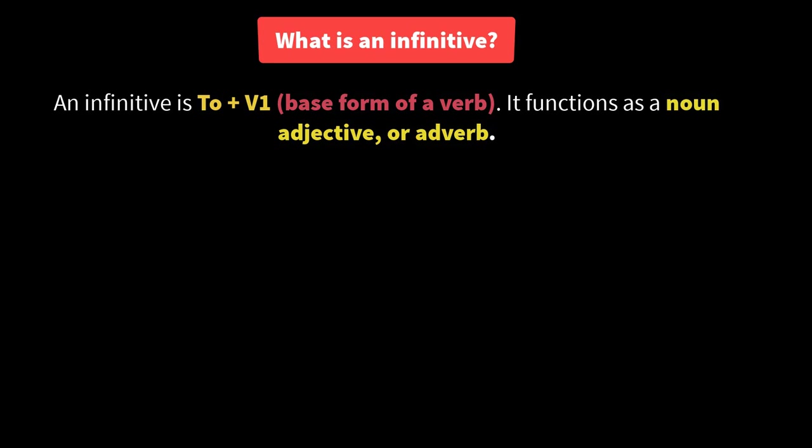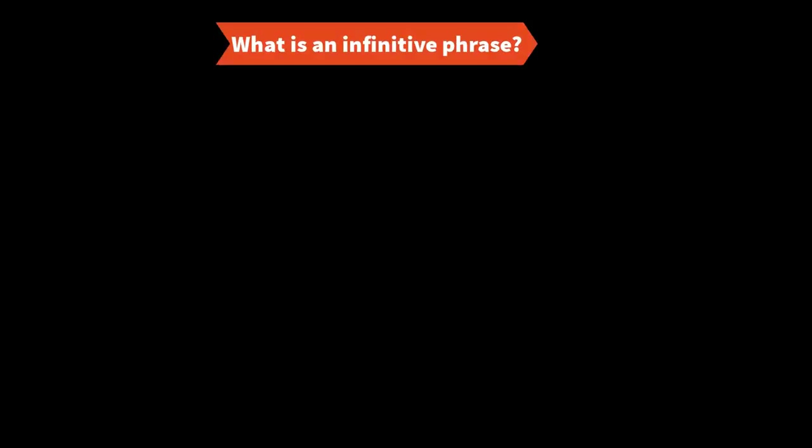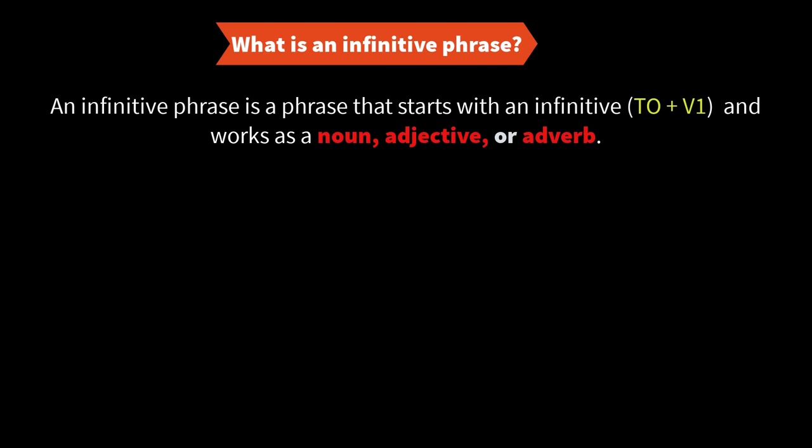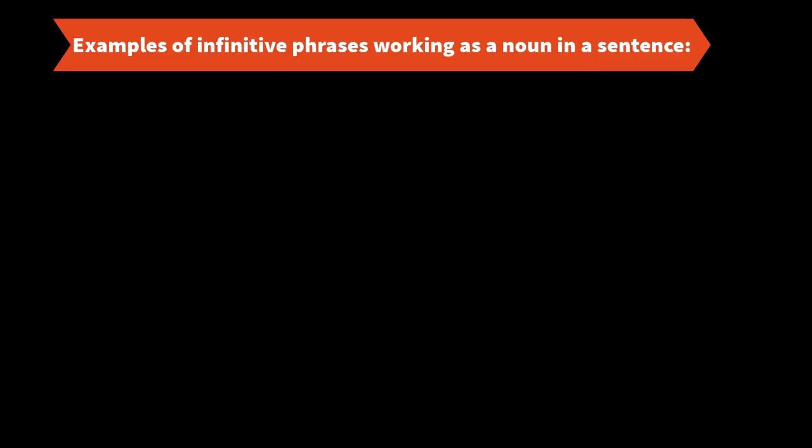Now let us understand what is an infinitive phrase. An infinitive phrase is a group of words that starts with an infinitive and functions as a noun, adjective, or adverb. Now let us take some examples and understand this, starting with examples of infinitive phrases working as a noun in a sentence.